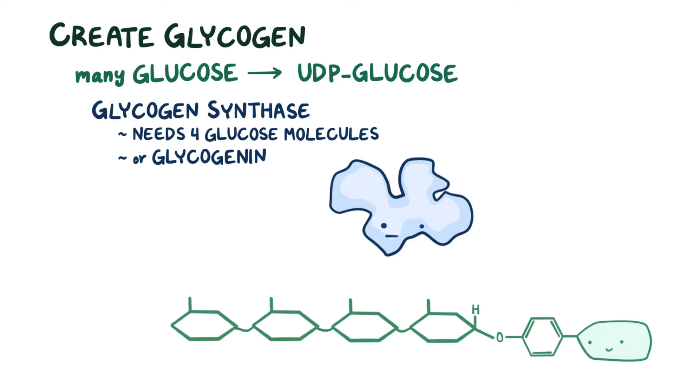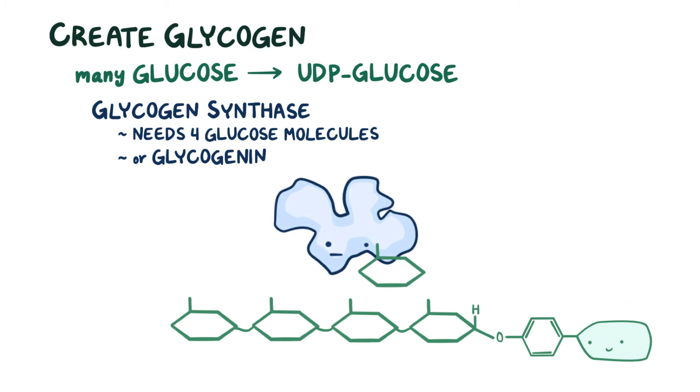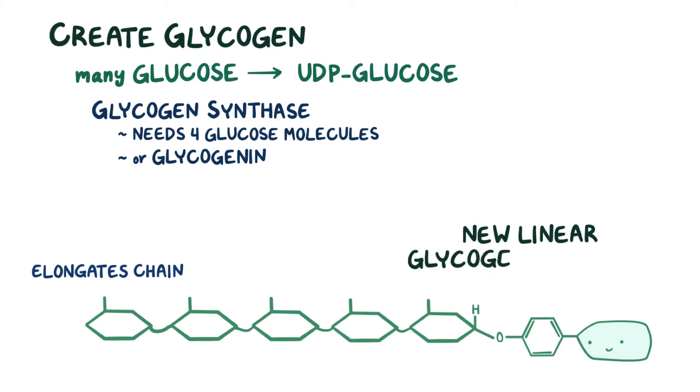By doing that, it's able to tell glycogen synthase, hey, we have a chain here that looks kind of like an old glycogen molecule. And glycogen synthase falls for it, and elongates this short chain on glycogenin by attaching lots of glucose molecules to it through alpha-1,4 glycosidic bonds. This elongates the chain and creates a new linear glycogen molecule.